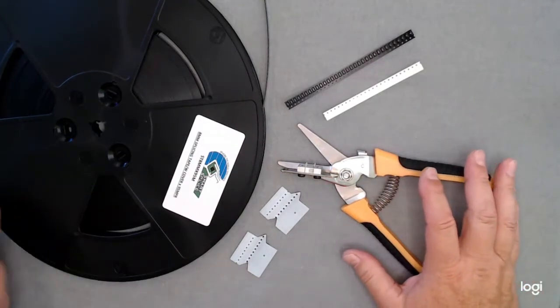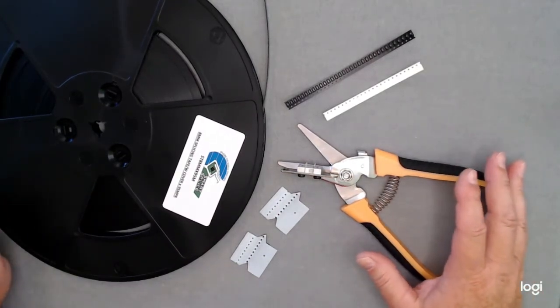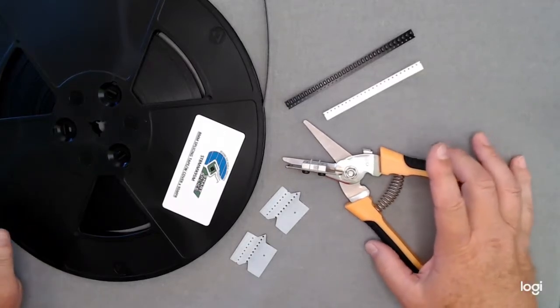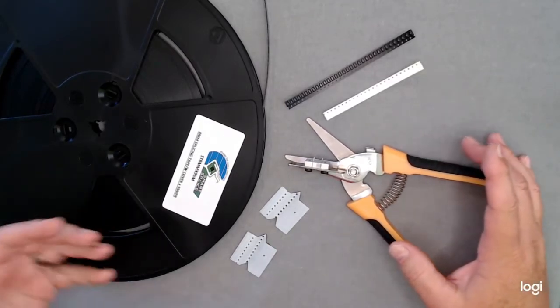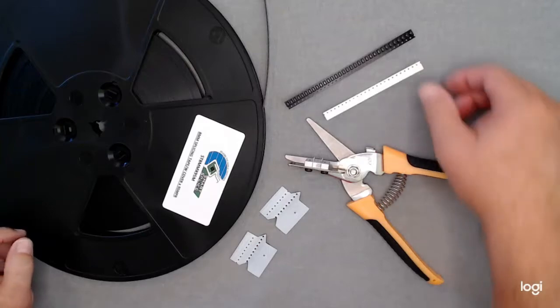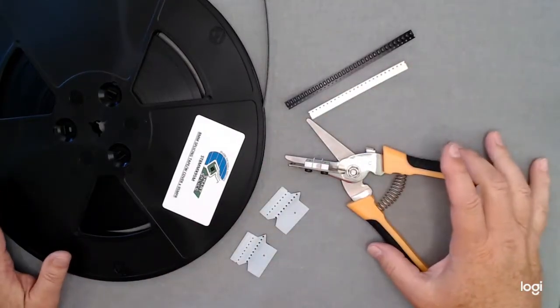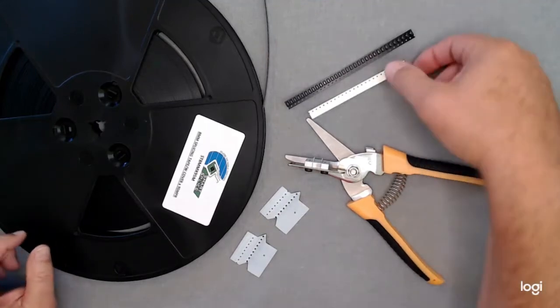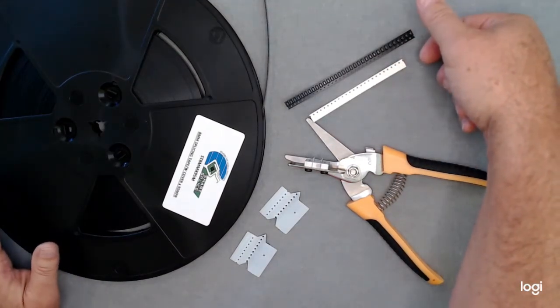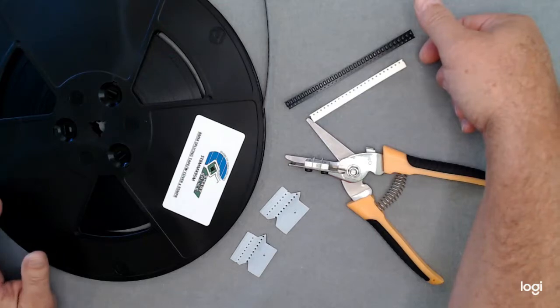I want to show you how to attach our carrier tape extender to the tape that you already have. Whether you have a small piece or a reel with no empty pockets at the beginning, you'll want to use this type of situation if you have feeders that don't accept just the cover tape extender.